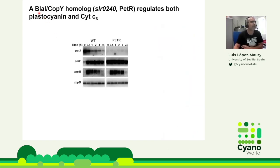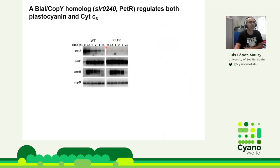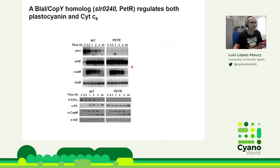We knocked out the transcriptional factor, which we renamed PETR, and analyzed the expression of the two genes in response to copper. In the PETR mutant, the cytochrome C6 gene is not expressed at all, even in copper-free medium, while the plastocyanin gene is expressed even in the absence of copper — showing that PETR was the regulator for these two genes. At the protein level, the result was exactly the same: no cytochrome C6, and plastocyanin always expressed even without copper, although it accumulated more after copper addition.